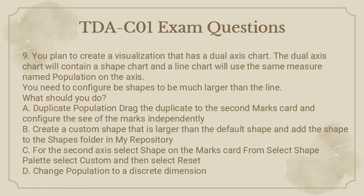a. Duplicate Population, drag the duplicate to the second Marks card, and configure the size of the marks independently. b. Create a custom shape that is larger than the default shape and add the shape to the shapes folder in My Repository. c. For the second axis, select Shape on the Marks card, from the shape palette select Custom, and then select Reset. d. Change Population to a Discrete Dimension.